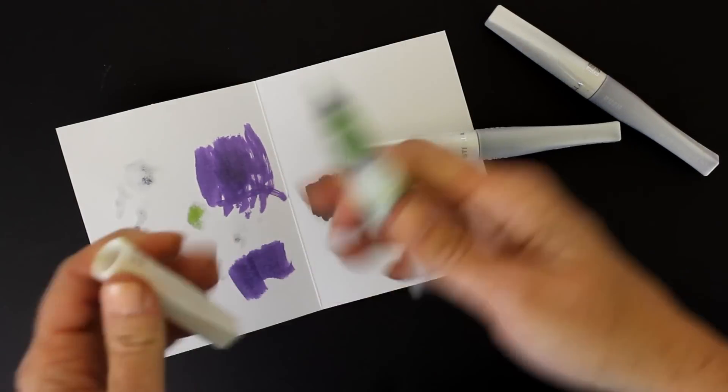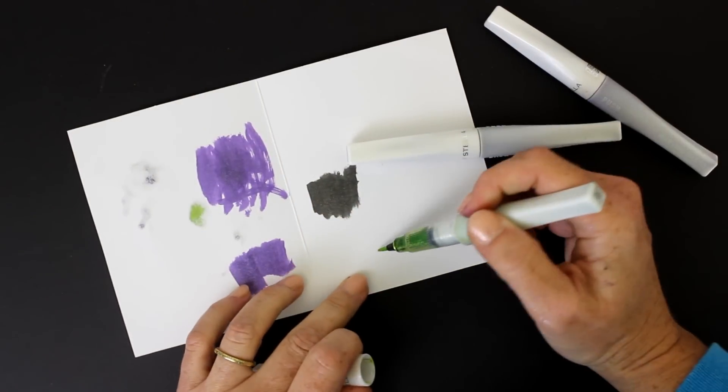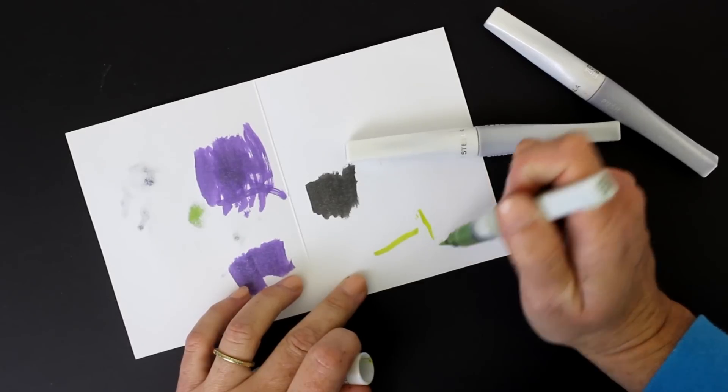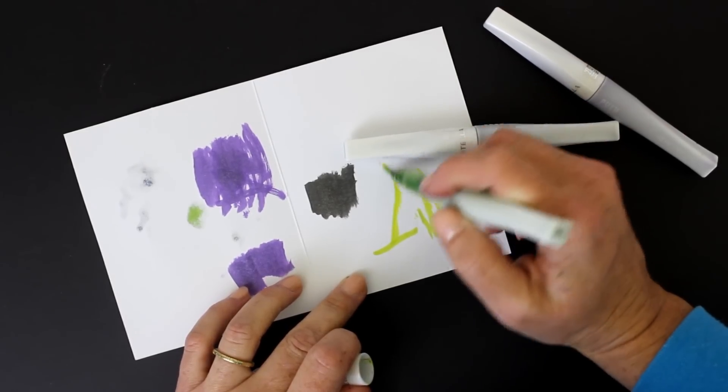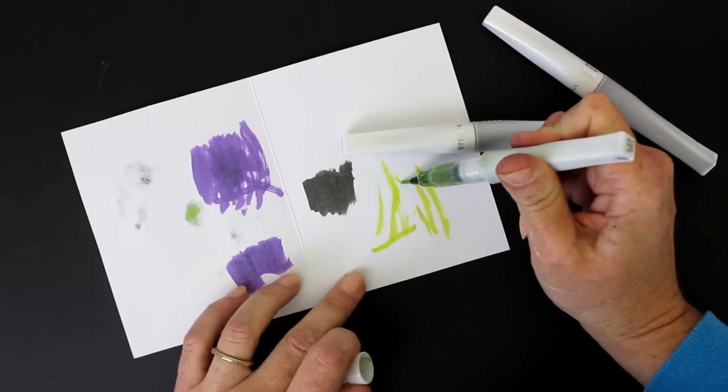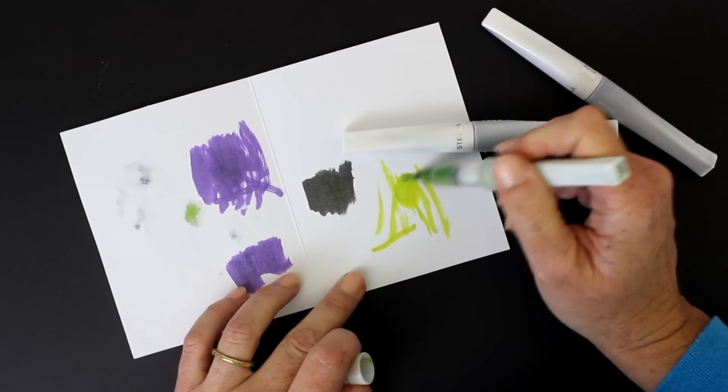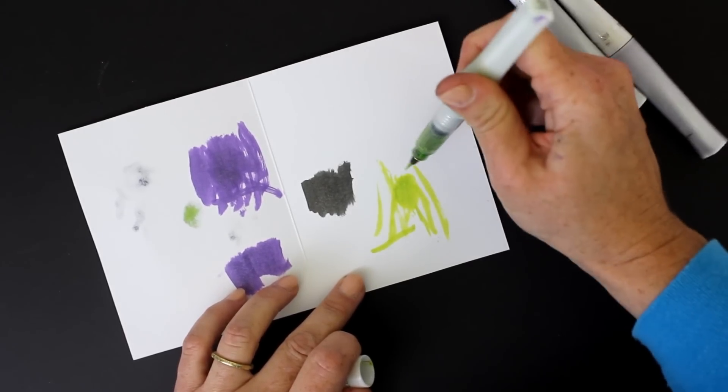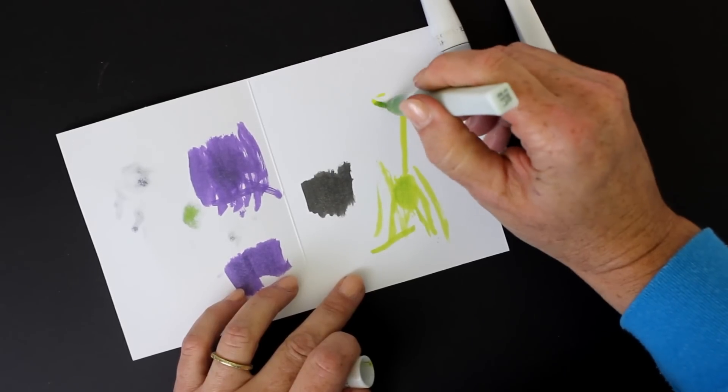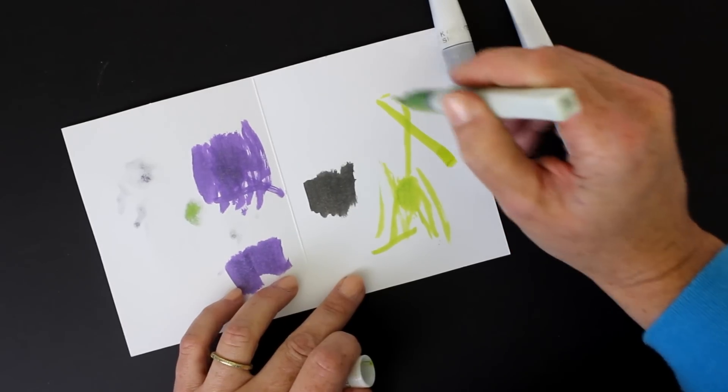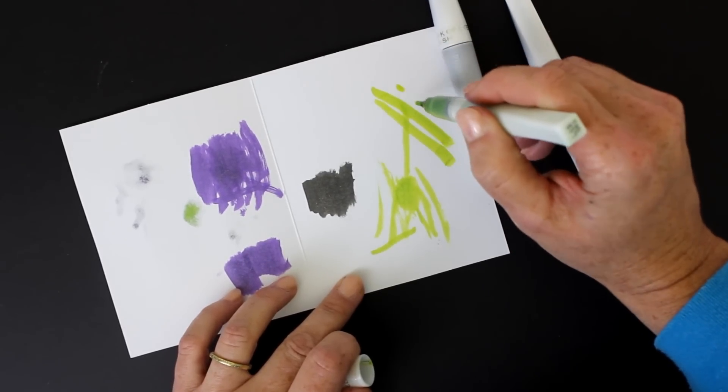They're really shimmery, which is kind of fun. They have a brush tip so you have a pointy end. I can't really get dots out of it because it's more like—these remind me exactly of the water brushes I have, but instead it dispenses pretty color. So you can experiment with a broader mark and then thinner marks.